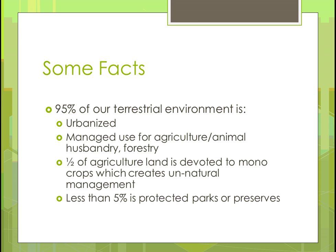Some facts to wrap up: ninety-five percent of our environment is urbanized — in other words, non-farming — or managed for the use of agriculture, animal husbandry, and forestry. Half of our agricultural land is devoted to monocrops, like a field of soybeans, and as we know, that creates unnatural management requiring fertilizers to keep it going. Less than five percent of our land is protected as parks or preserves, and that ecosystem provides a lot of beneficial insects. So there's not much out there, and we want to make sure we don't lose what we have.